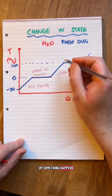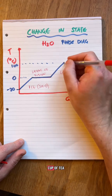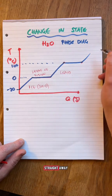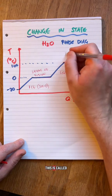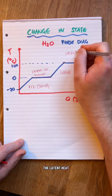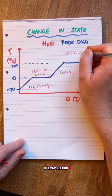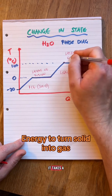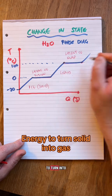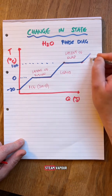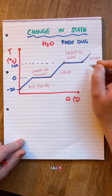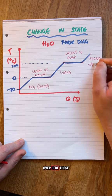Then it goes up. Something happens at 100. You all have a cup of tea. Water doesn't evaporate straight away. This is called the latent heat of evaporation. It takes a while for water to turn into steam, vapor, whatever you want to call it over here.